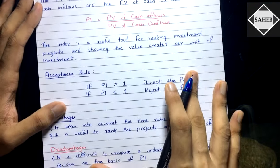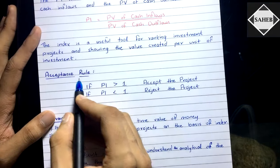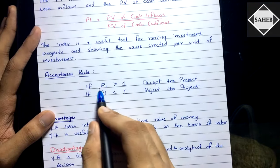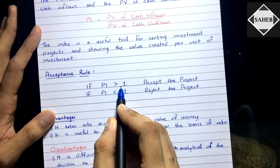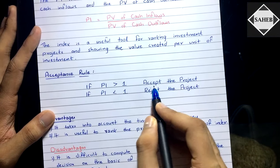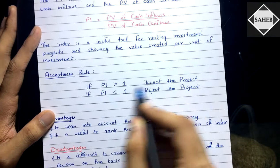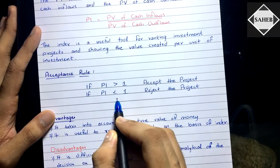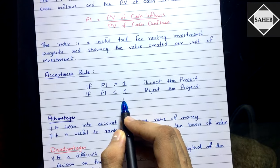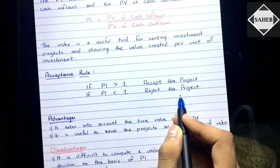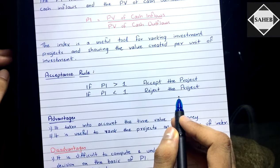The decision criteria: if PI is greater than one, we accept the project. If PI is less than one, we reject the project. It's as simple as that.